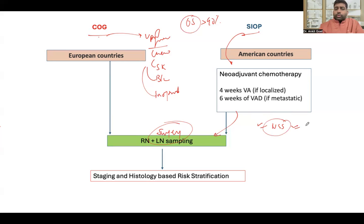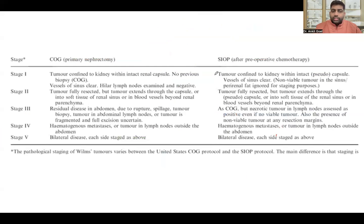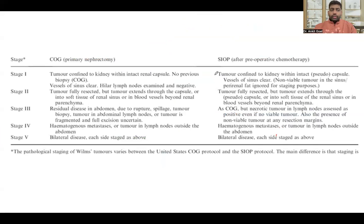Whether or not neoadjuvant chemotherapy is given, you do a radical nephrectomy, and that is when staging is done — the whole staging of the Wilms tumor is surgical staging. Looking at the staging: there are five stages. Stage four is metastasis, and stage five is bilateral disease. Stages one through three are the key ones to remember. Stage one is always confined to the kidney.